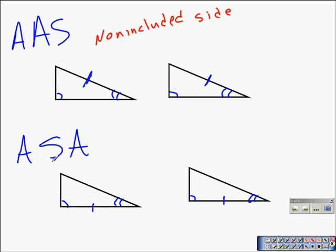Angle-side-angle: notice where the S is. It's in between the angles, much like we had an included angle before. Now we have an included side. The side is between the vertices.